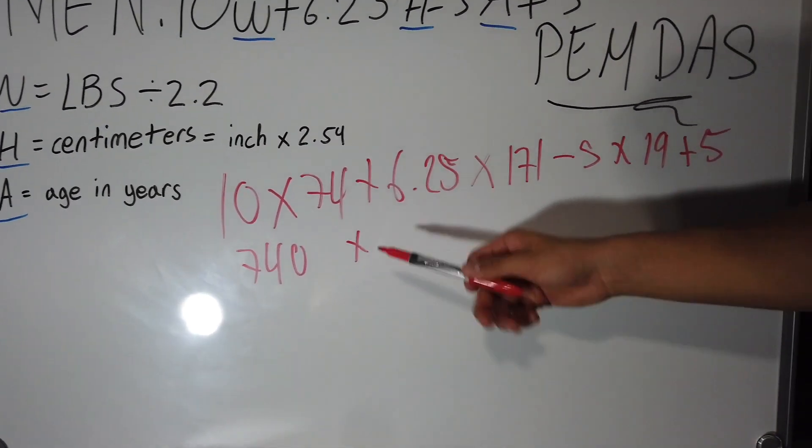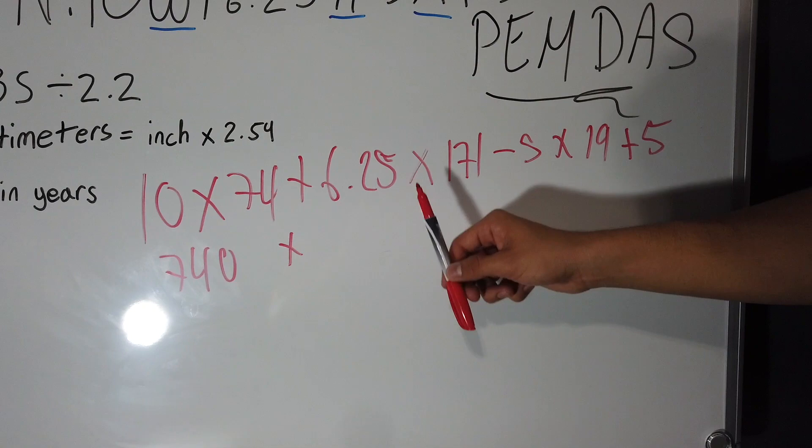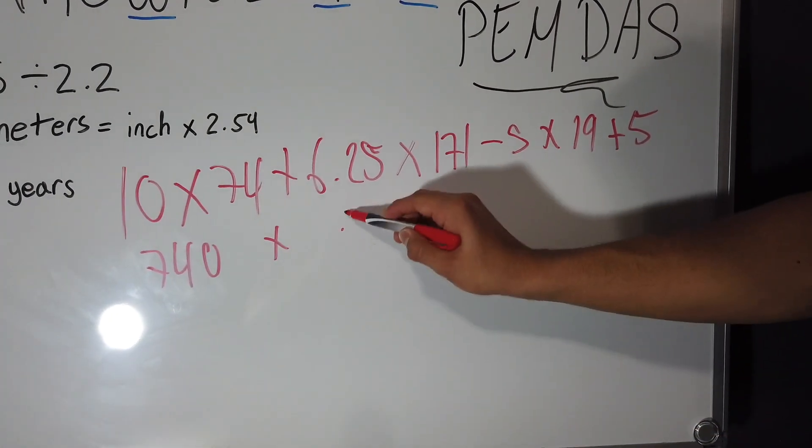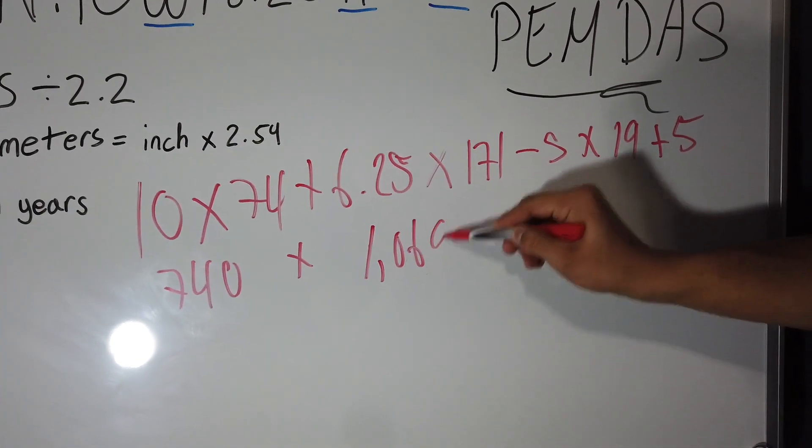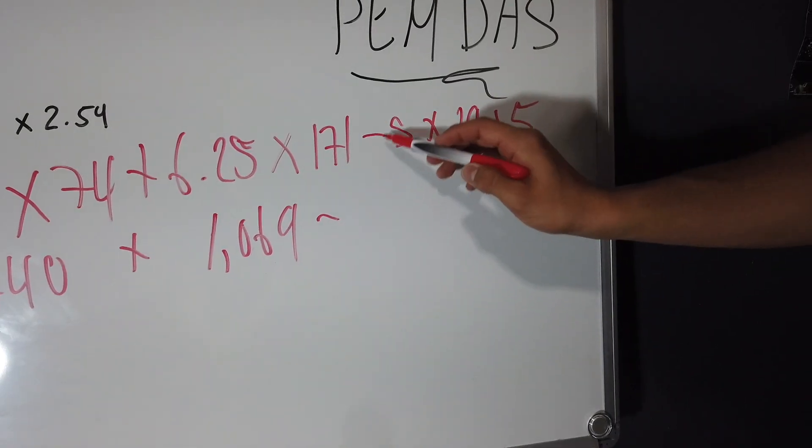So then when you do 6.25 times 171, it'll give you 1069. Bring this one down.